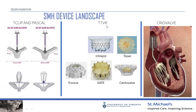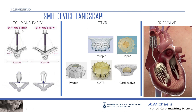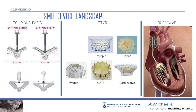At St. Michael's we use different categories of devices. Most commonly we use the TriClip and the Pascal. The TriClip is the Abbott fourth-generation device with two sizes: NT and XTW — NT is the narrower clip, XTW is longer with arms up to 12 millimeters. The Pascal, made by Edwards, has different grippers and a different shape of the grasping device, but functions similarly as a clip.